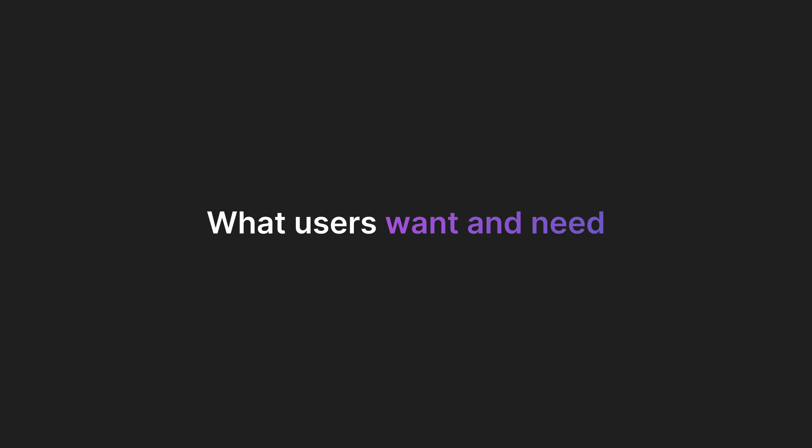For example, if you're designing a social media app you need to think about what your users want and need from the app. Do they want to be able to post photos? Do they want to message other users or find new friends? Once you know what your users want, you can start designing your UI around those needs. And please don't fall in love with your design.